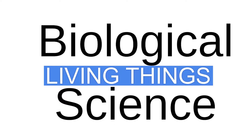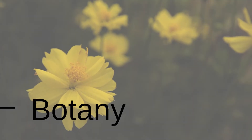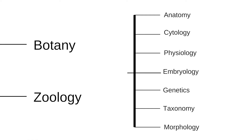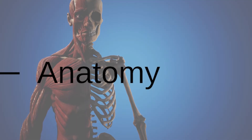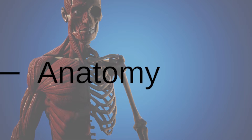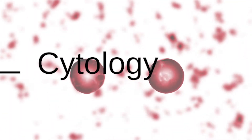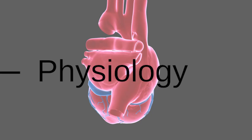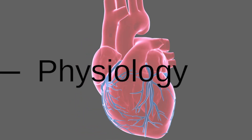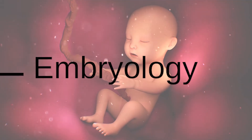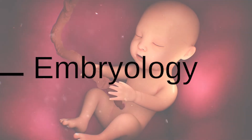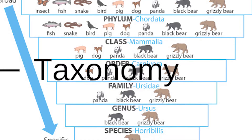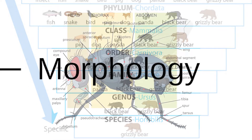The biological sciences are involved with the study of living things and can be divided into two main branches: botany, the study of plants, and zoology, the study of animals. These two branches are further sub-categorized into anatomy — the study of internal animal structures and form of organisms; cytology — the study of cells; physiology — the study of functions and activities of cells, organs, and tissues; embryology — the study of development of an organism from a fertilized egg; genetics — the study of heredity; and taxonomy — the study of grouping and naming of living things.